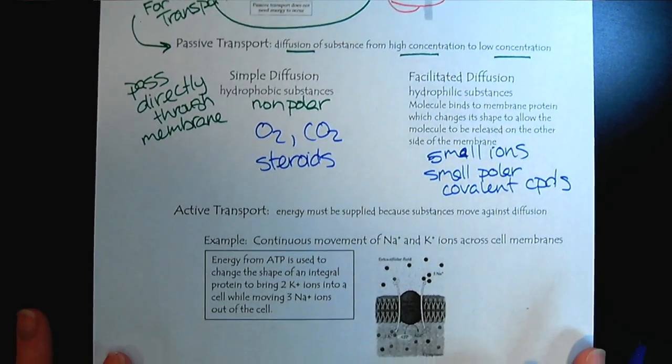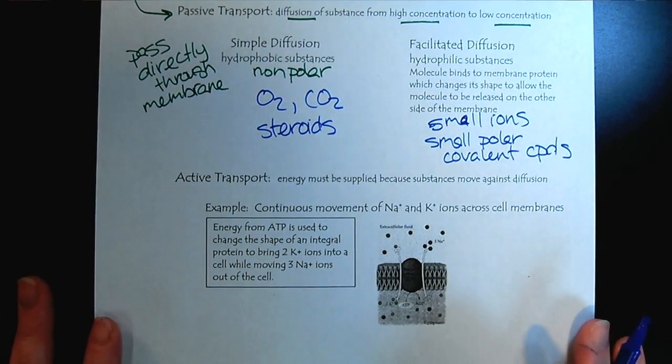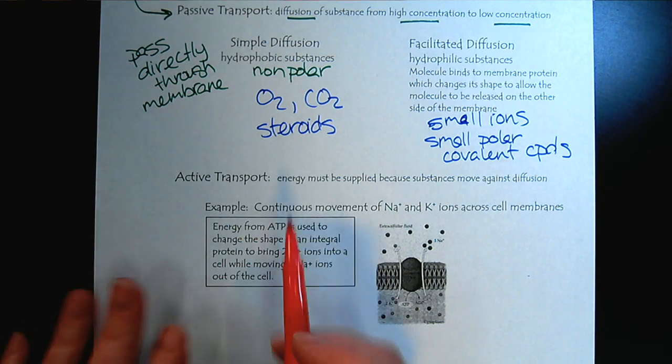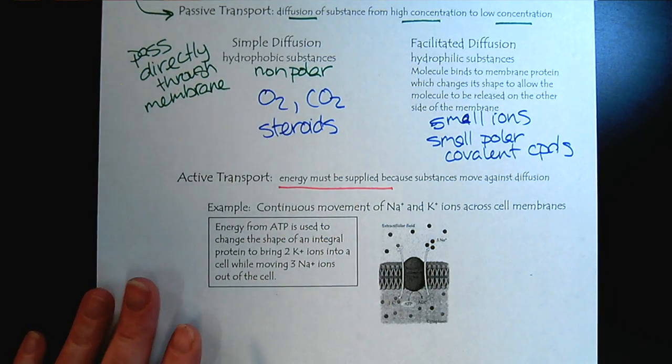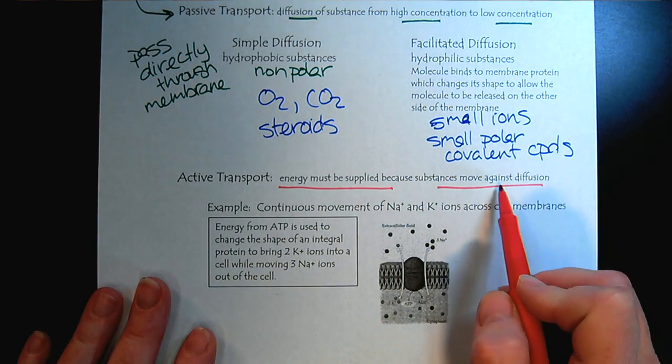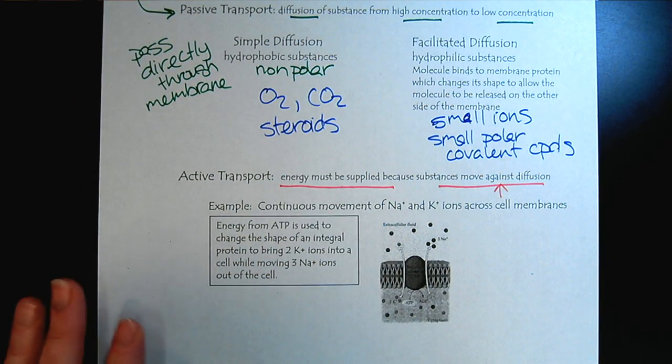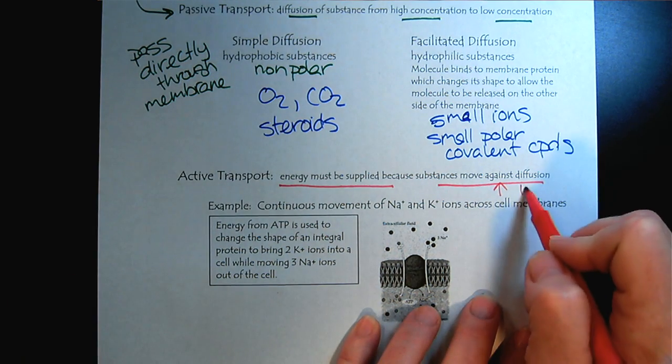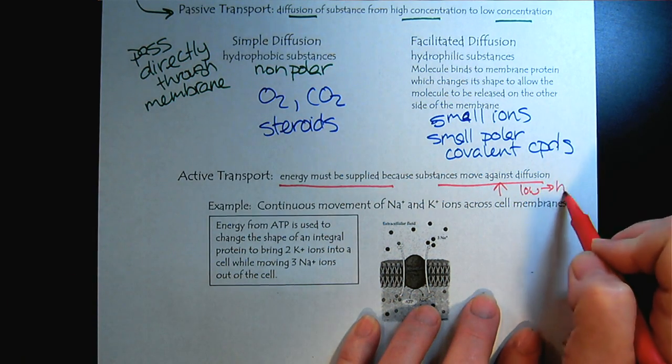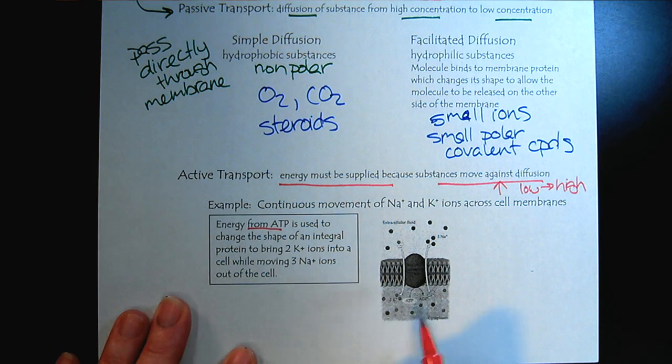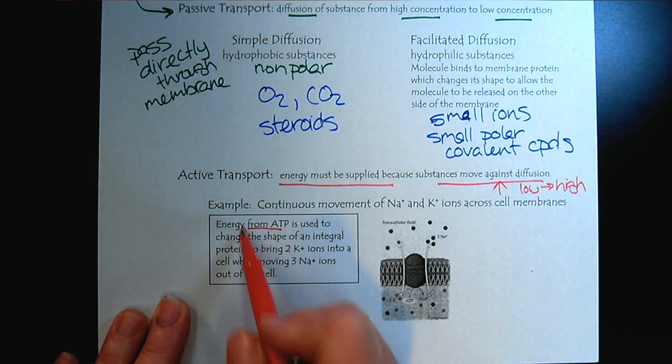And then briefly we'll look at active transport. And what we will see there is now we have to have energy supplied. The reason for this is because the substances are moving against the gradient. We're going to try to go from low concentration to high. So that requires energy. It's like swimming upstream. In most cases you'll see that it's energy from ATP. So we see that right here, there's our ATP.